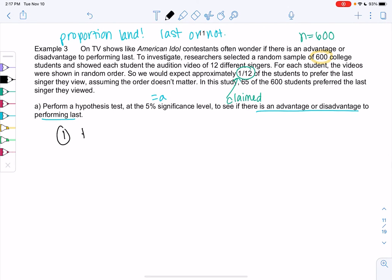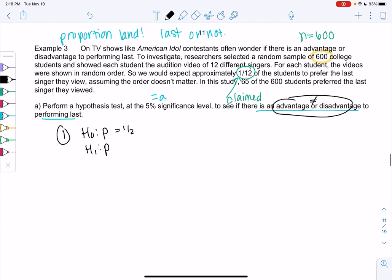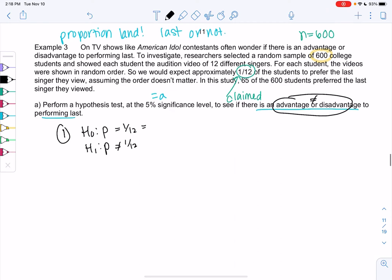So let's go ahead and perform a hypothesis test at 5%, that's alpha, significance, to see if there is an advantage or disadvantage to performing last. So we're in proportion land because our variable is who they prefer. They prefer last or not. So this is a proportion. It's last or not. There's no numerical data. So let's go ahead and set up a hypothesis. We know it involves P for proportions. And then my claim proportion is 1/12. So it will equal 1/12. And then advantage or disadvantage just means it's not equal. If you want to divide and get a decimal, 1/12 would be 0.0833.